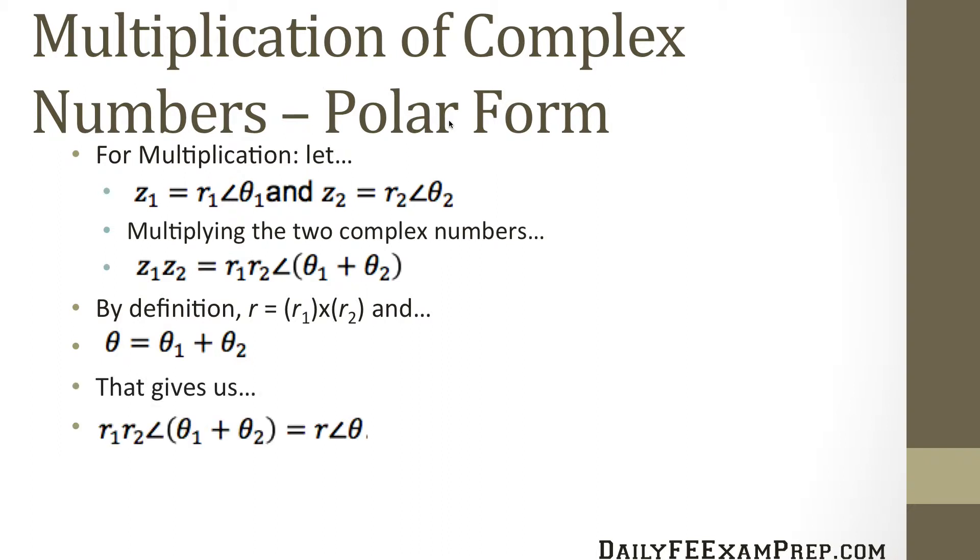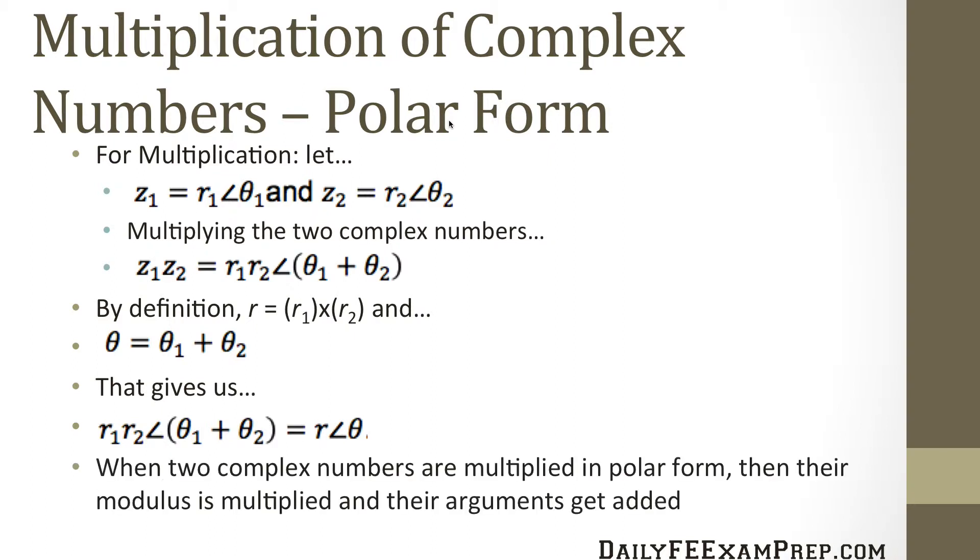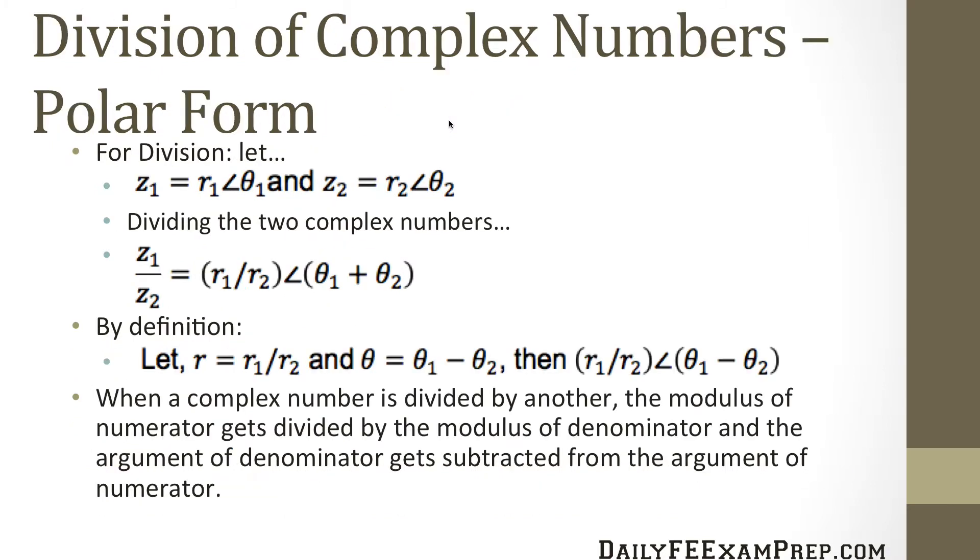When two complex numbers are multiplied in polar form, their modulus is multiplied and their arguments get added. Be sure to recognize the difference because they're not both multiplied. You have one that's multiplied and another set that's added. Be sure to note that down.